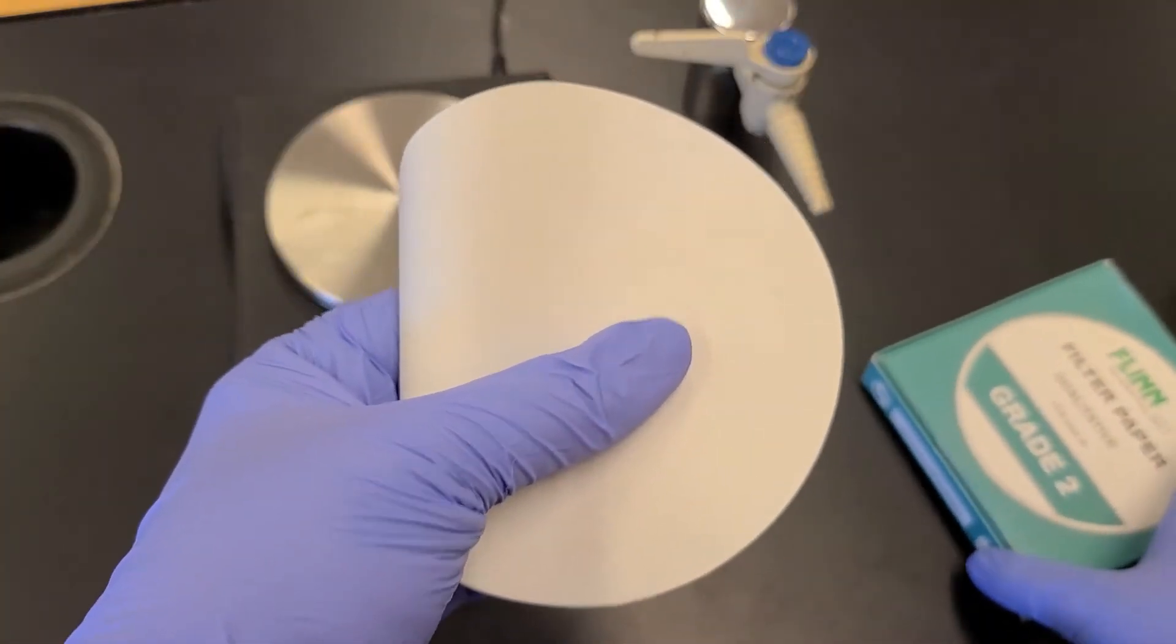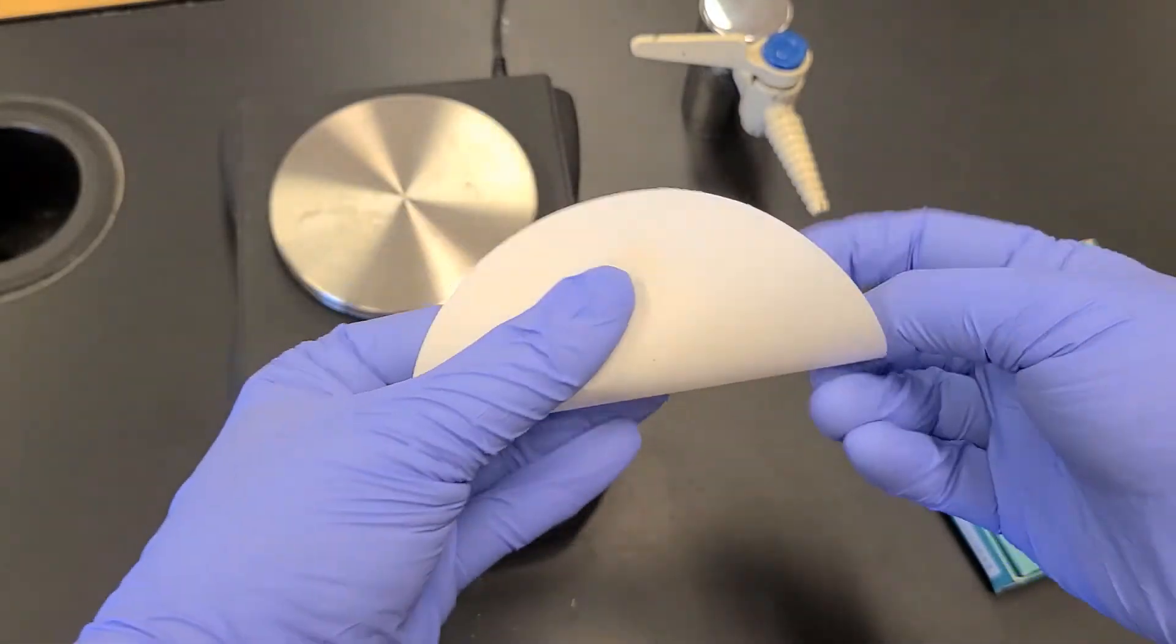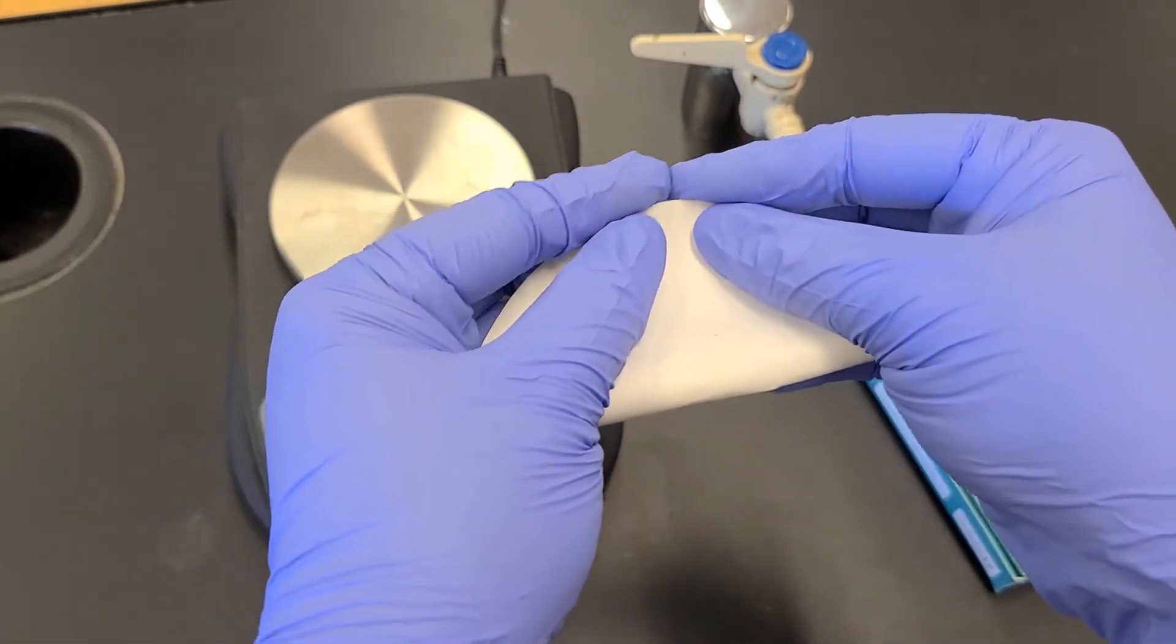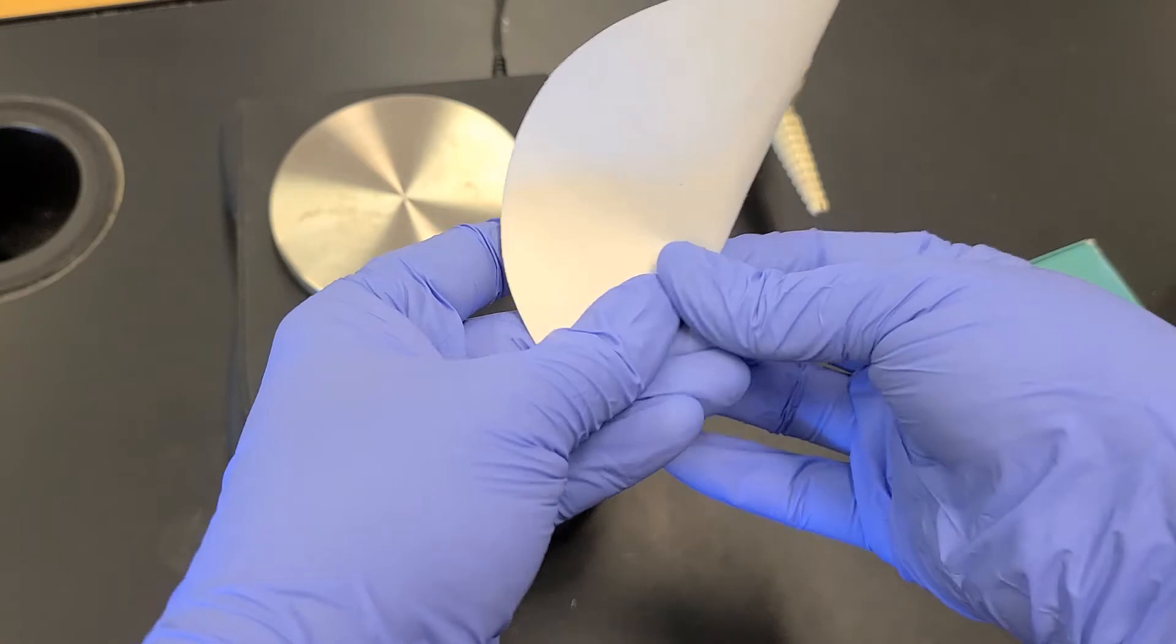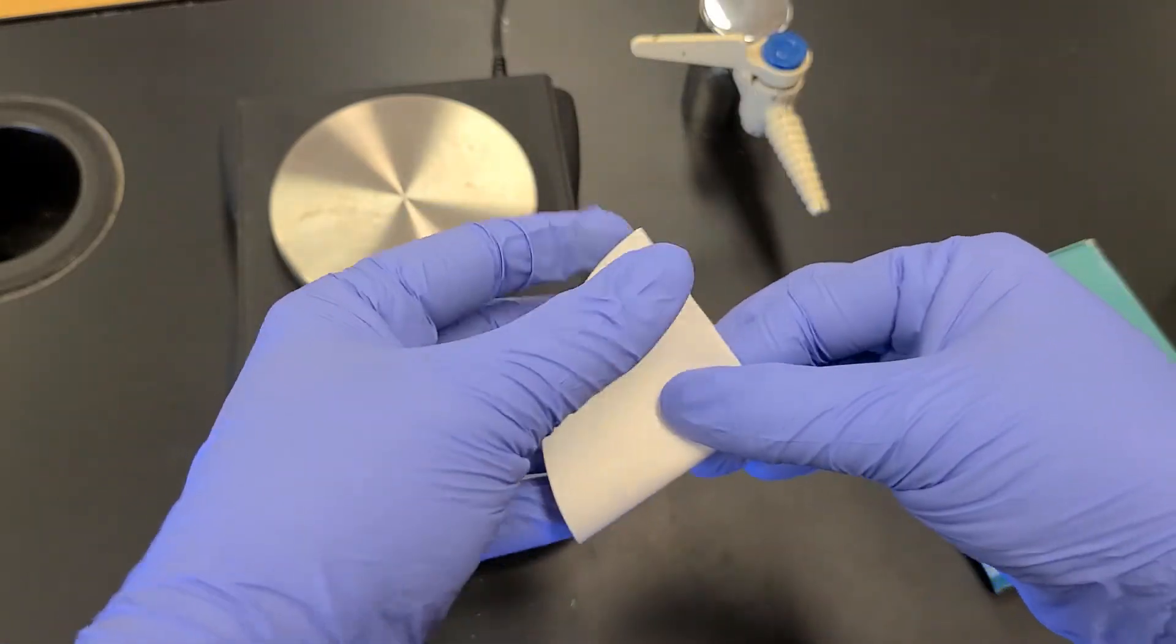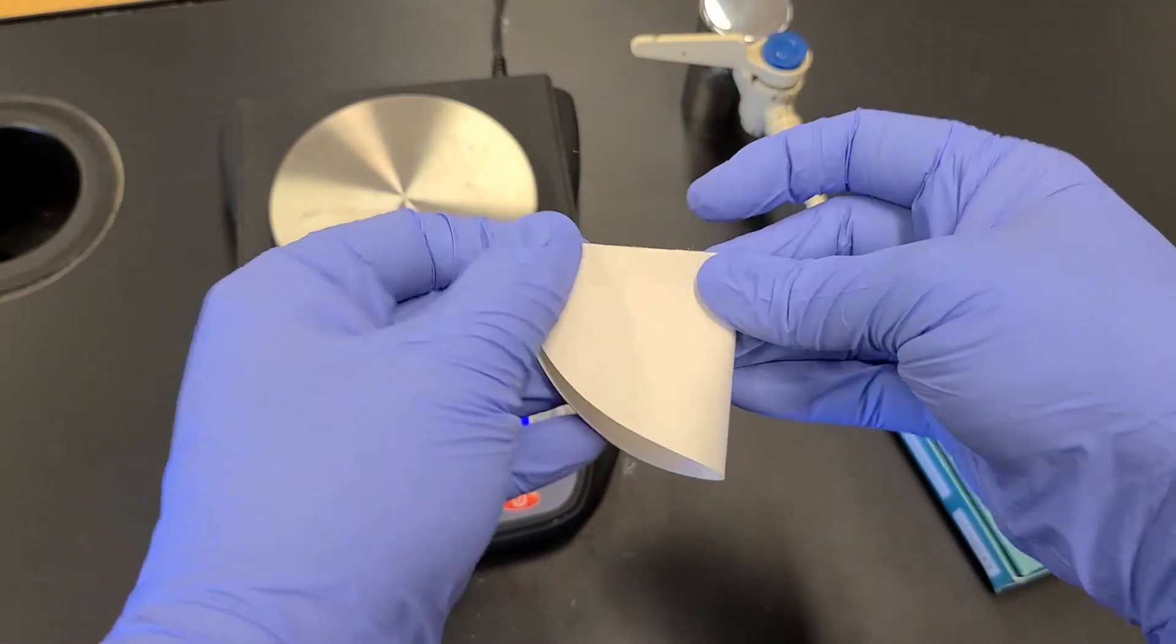To fold the filter paper, you're going to want to fold it in half first into a taco, and make sure you crease all your edges. Fold it again into a pizza slice.